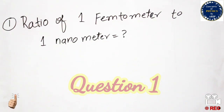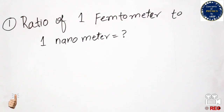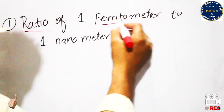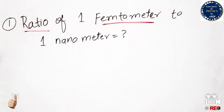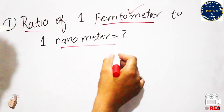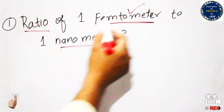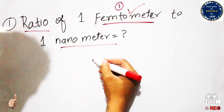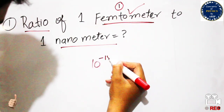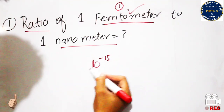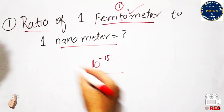Ratio means one term over another. One femtometer is a specific term and one nanometer is also a specific term. The value of one femtometer, placed in the numerator, is 10 to the power minus 15, and one nanometer in the denominator is 10 to the power minus 9.